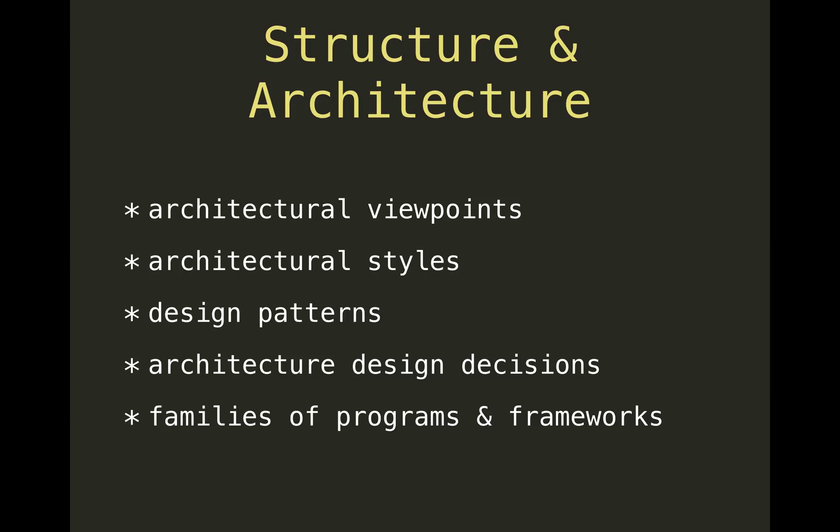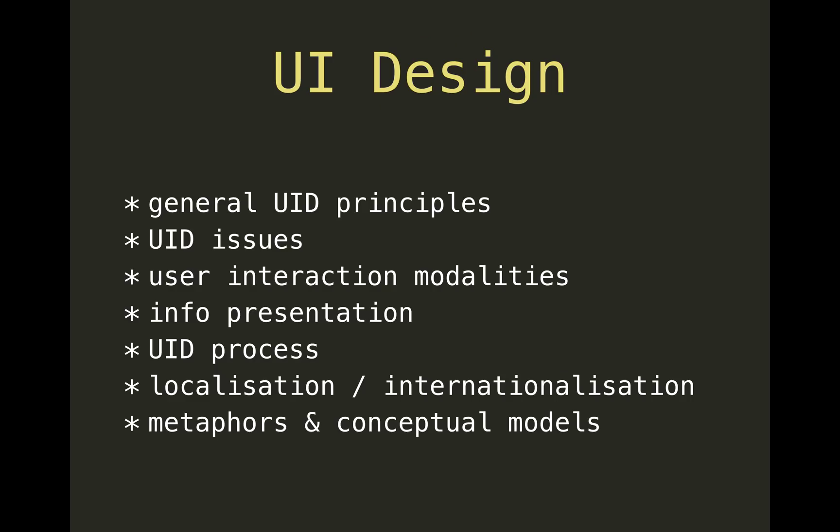Architectural styles — do you want a system to be adaptable to circumstances? Do you want it to be distributed? Do you want pipes and filters, or something else? Design patterns — there's an entire book on this and many additions to it. Then there are architecture design decisions, which are pretty straightforward, and framework programs, which are basically about facilitating some reuse in architecture.